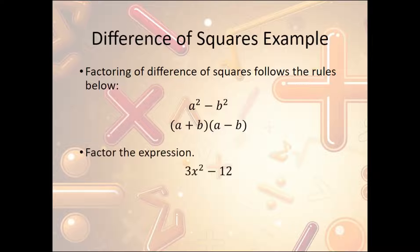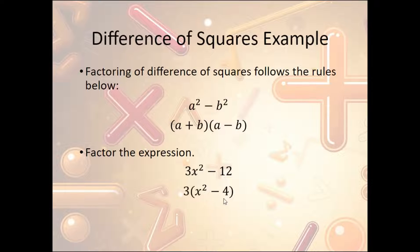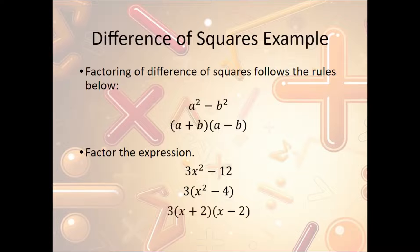Another example: 3x squared minus 12. We can see that 3 is not a perfect square and 12 is not a perfect square. However, we can see if we can factor out a common factor first. Is there anything in common between 3 and negative 12? Yes — 3 is a factor of both. So 3x squared divided by 3 is x squared, and negative 12 divided by 3 is negative 4. Now inside the parentheses we have x squared minus 4, which is a difference of squares — x squared minus 2 squared. So this becomes 3 times (x + 2)(x − 2).